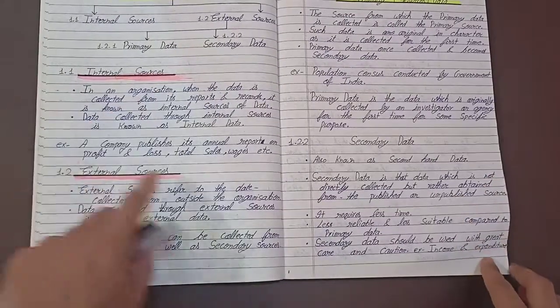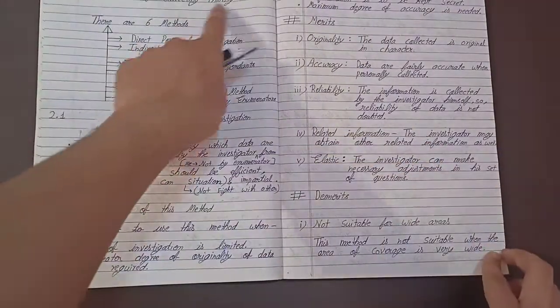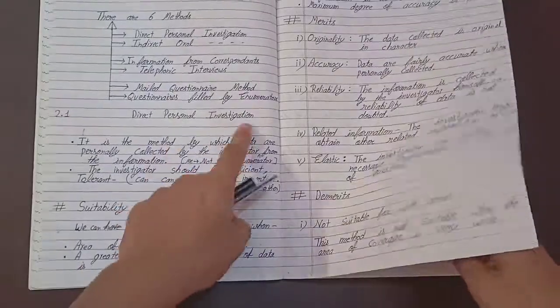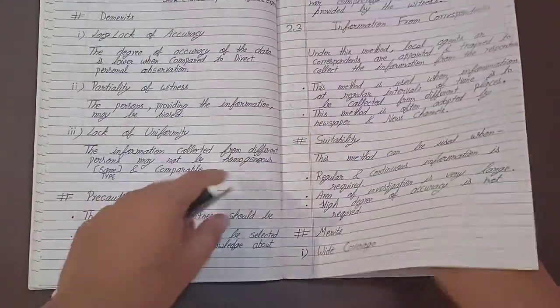Now internal sources, external sources, primary data, methods of collecting primary data - that's right - personal investigations, suitability, precautions.